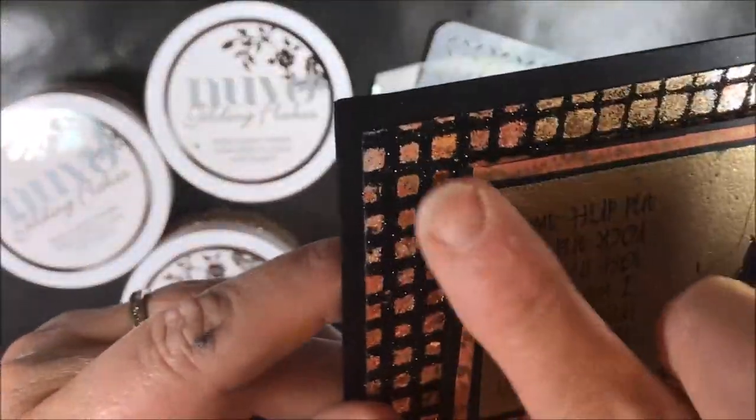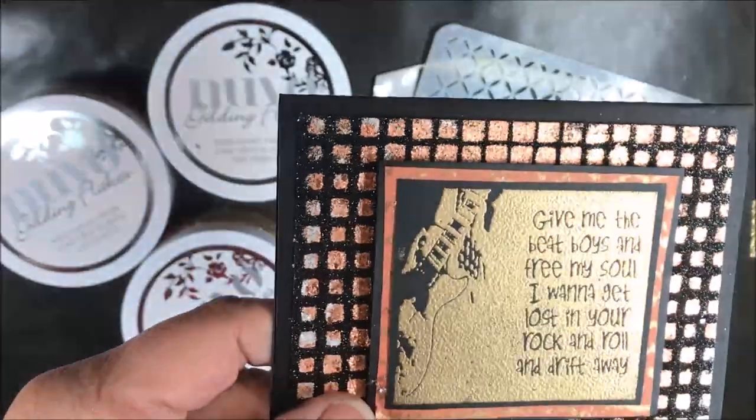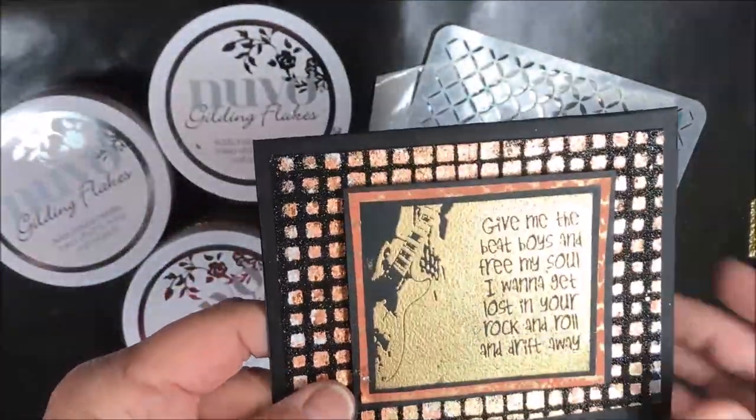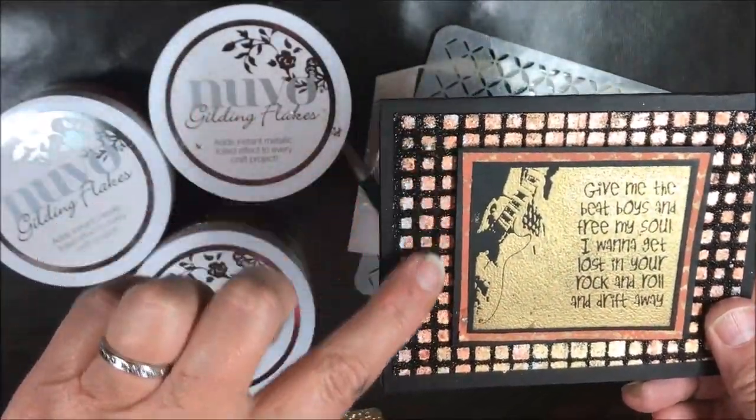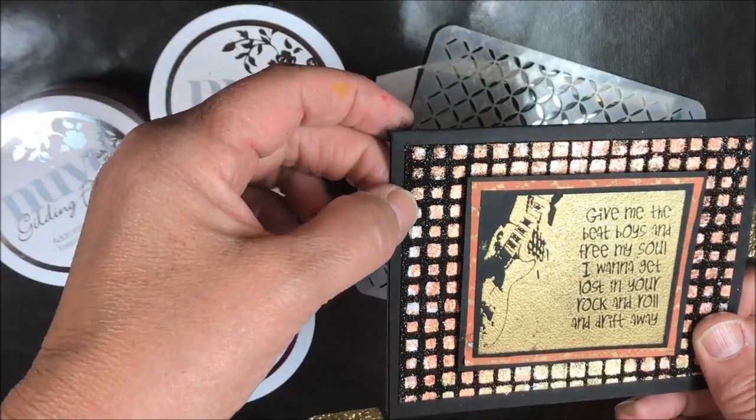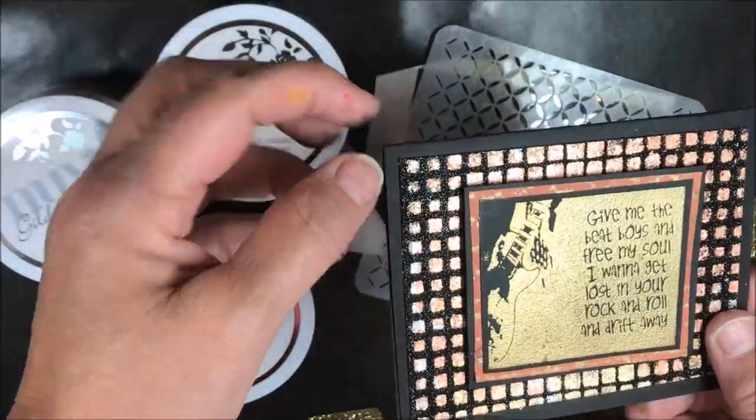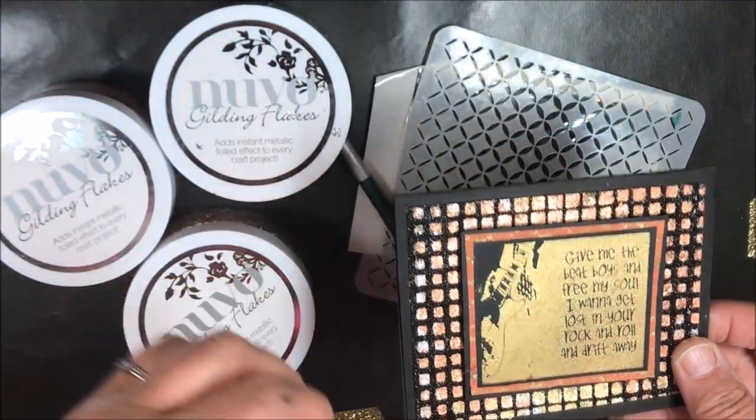This is the card—you can see the texture, the glitter and the gilding flakes. This is a stunning card in person. It has the beautiful gilding flakes and then the glitter which gives it this amazing velvety texture. I can't explain it any other way than that velvety texture.